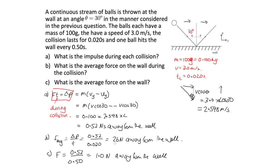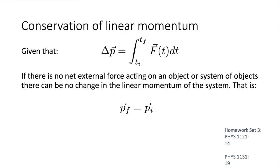This brings us to the conservation of linear momentum. Because the change in momentum equals the integral of F dt, if there is no external force acting on an object or system, then there can be no change in the linear momentum. Therefore the final linear momentum must equal the initial linear momentum. For practice, homework set 3 for 1A question 14, and for higher 1A question 19.